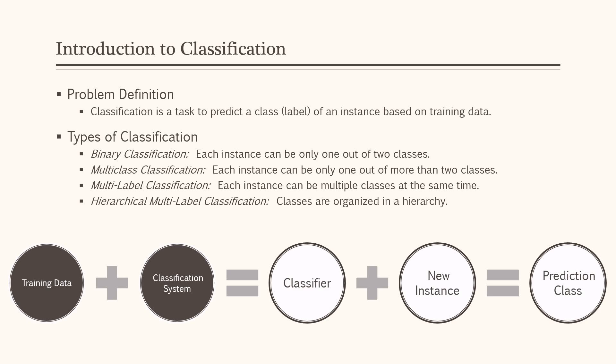There are four main types of classification. The simplest one is binary classification, where each instance can be only one out of two classes. In multi-class classification, it can have more than two classes, but each instance can still be only one class.